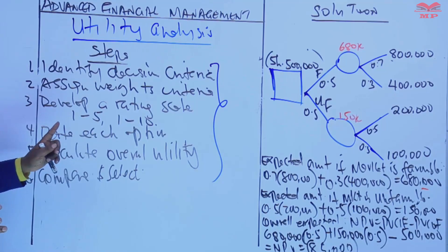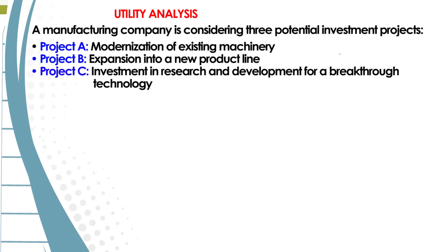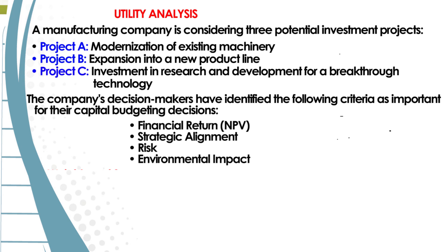Let's look at an illustration. A manufacturing company is considering three potential investment projects: Project A — modernization of existing machinery; Project B — expansion into a new product line; Project C — investment in research and development for a breakthrough technology. The company's decision makers have identified the following criteria as important for capital budgeting decisions.